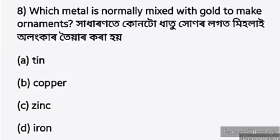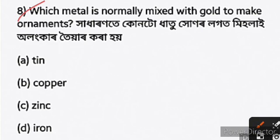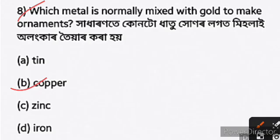Question eight: which metal is normally mixed with gold to make ornaments? The answer is copper. Copper is mixed with gold to make ornaments.